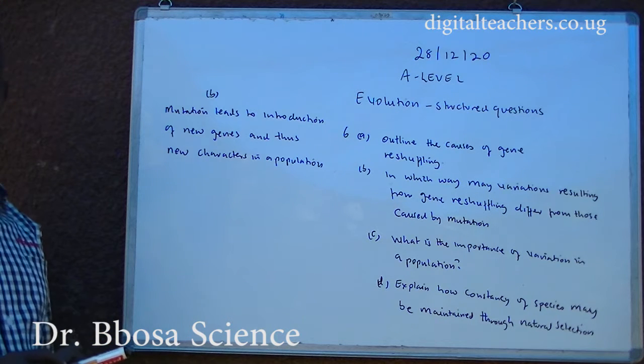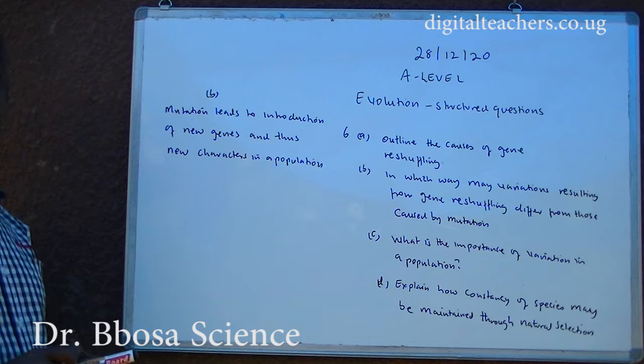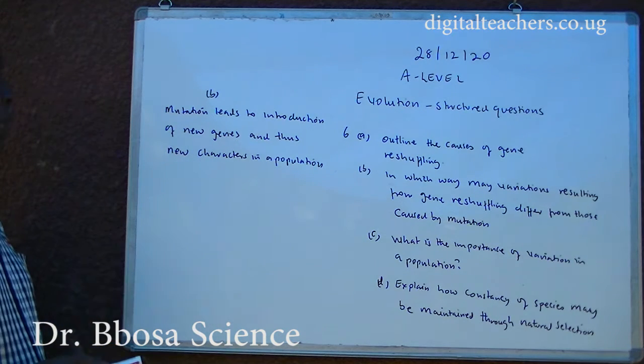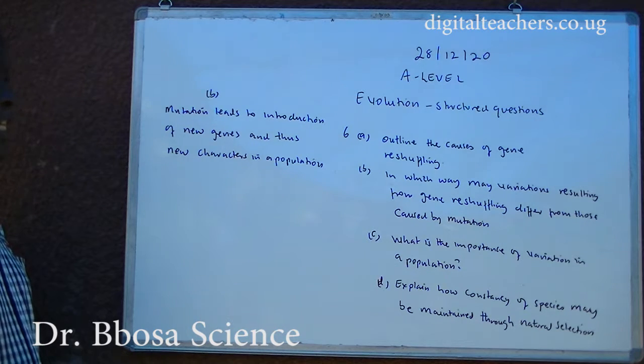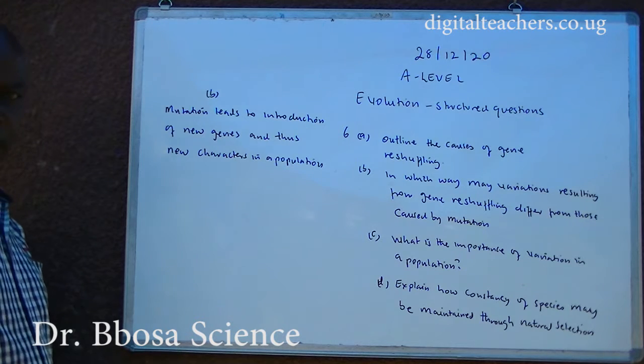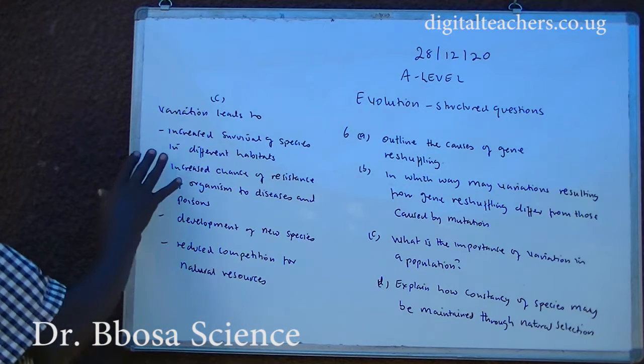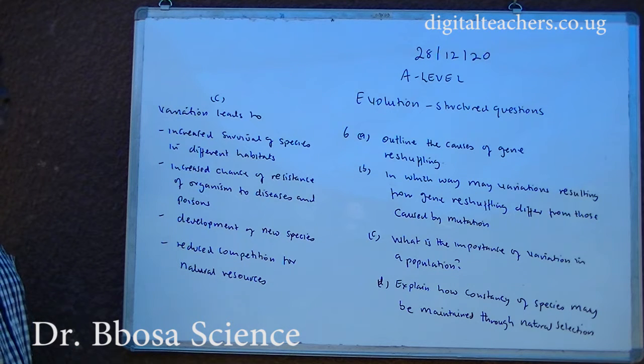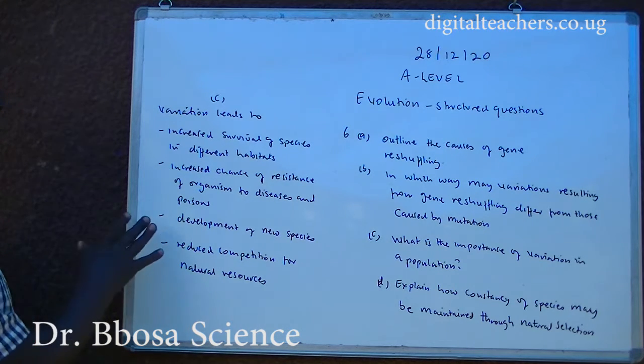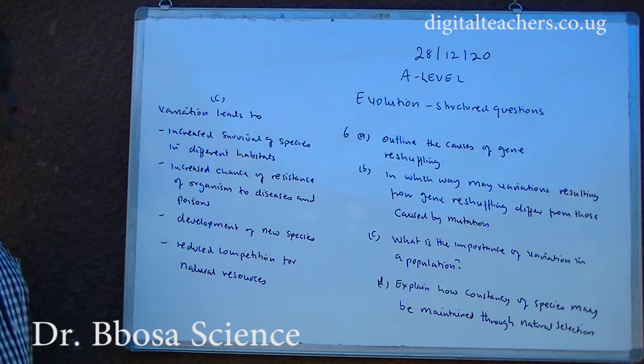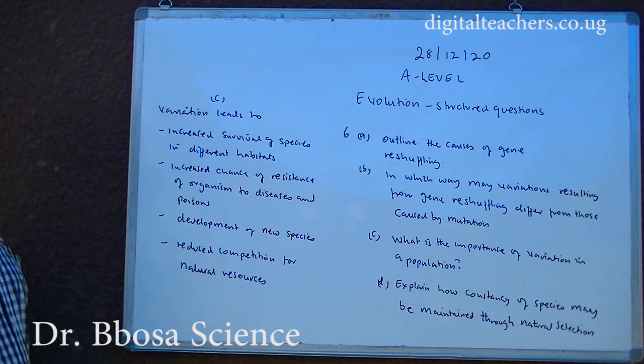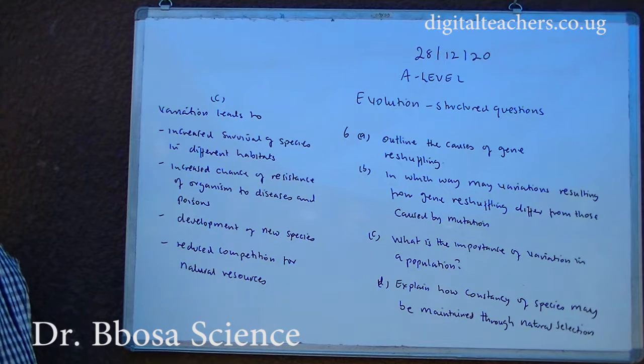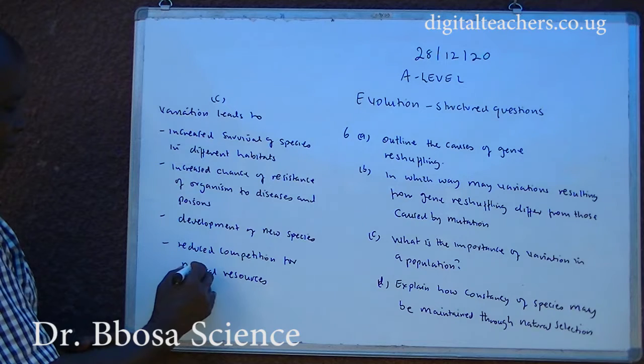Variation due to gene mutation is different from that of gene reshuffling because mutation leads to introduction of new genes, thus new characters in a population. C. Variation leads to increased survival of species in different habitats, increased chance of resistance of organisms to diseases and poisoning, development of new species, and reduced competition for natural resources.